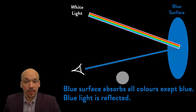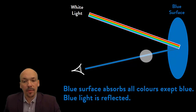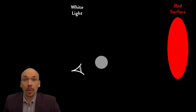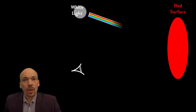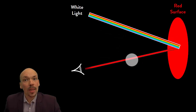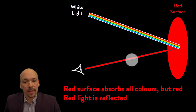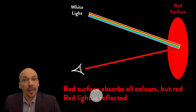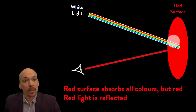The blue light is reflected, and because it's reflected you can see it as blue. A red surface does something similar, but with red instead of blue. So if we have white light shining upon a red surface, then only red is reflected. A red surface absorbs all colors but red, so red light is reflected and that's why we see it as a red surface.